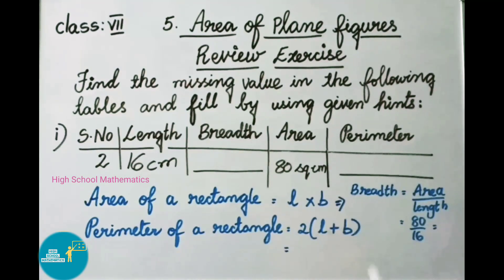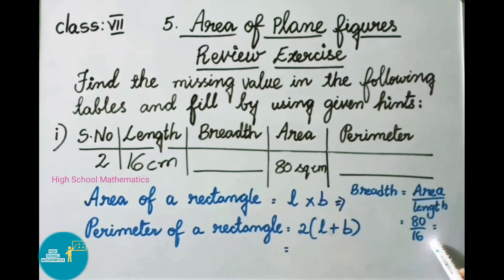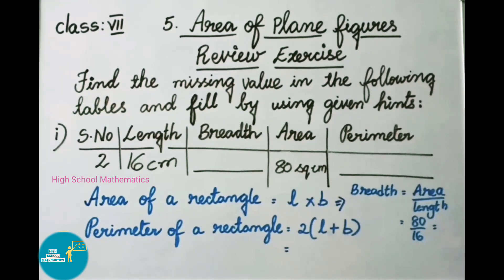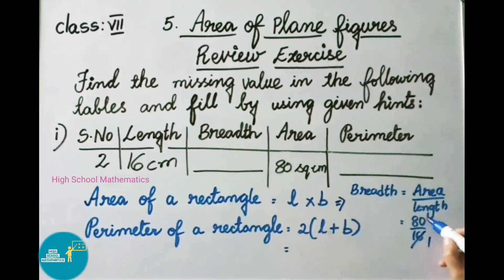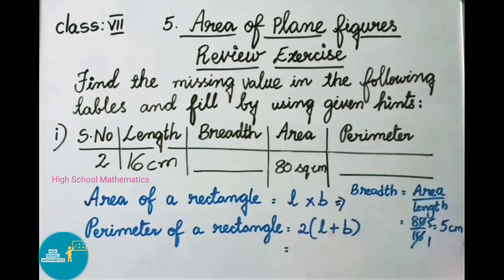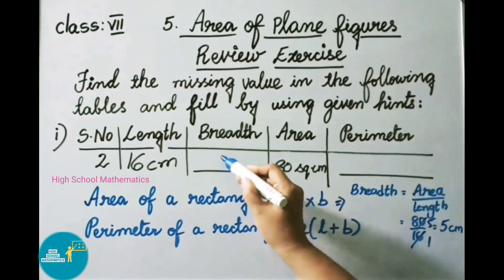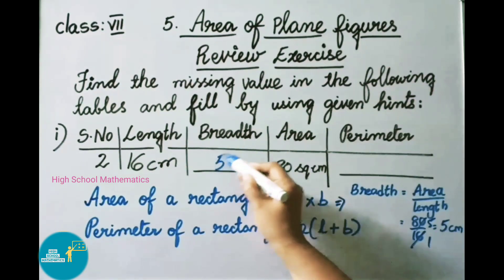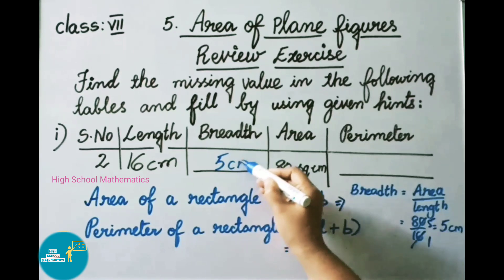Breadth equals 80 square centimeters ÷ 16 centimeters. By cancellation, 80 ÷ 16 = 5. So the breadth is 5 centimeters. Let us write 5 centimeters in the table.